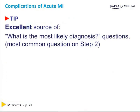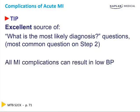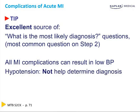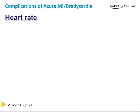MI complications all cause hypotension. The key to distinguishing them is looking first at the heart rate and associated findings, not just hypotension, since all MI complications can cause hypotension, lightheadedness, and confusion. Sinus bradycardia is common in MI due to ischemia of the sinoatrial node.